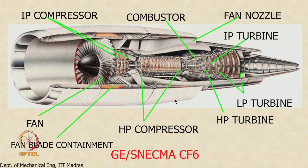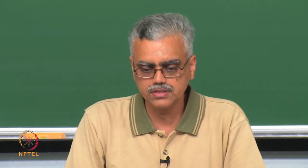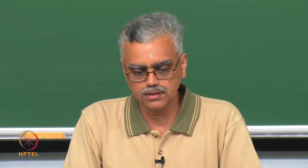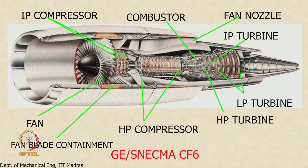Here we are looking at a mid-size engine from GE — the CF-6 engine, typically used in the Airbus A320 and Boeing 737 and similar mid-size aircraft. You can see the general features: there is a big fan in the front, an intermediate pressure compressor, and a high pressure compressor. You can see the fan blades, the area decreasing toward the core, and then the combustor.